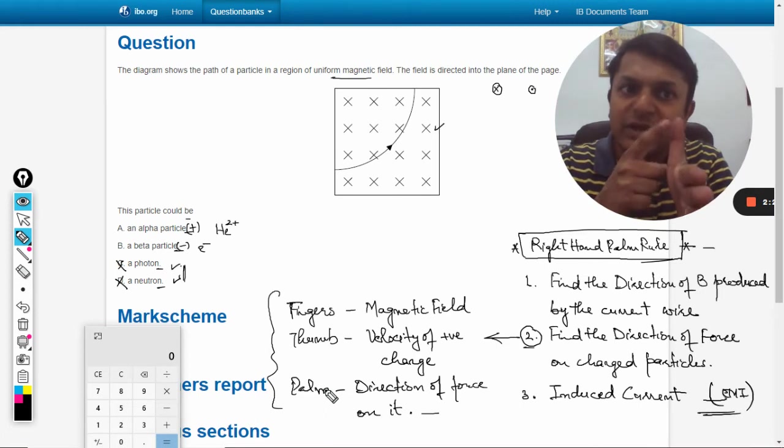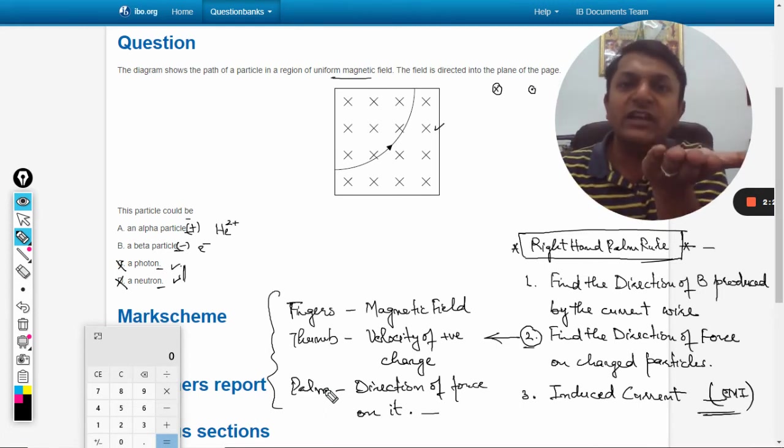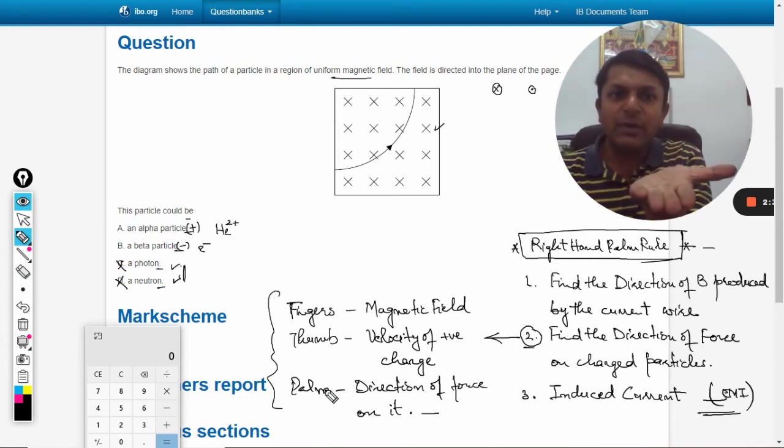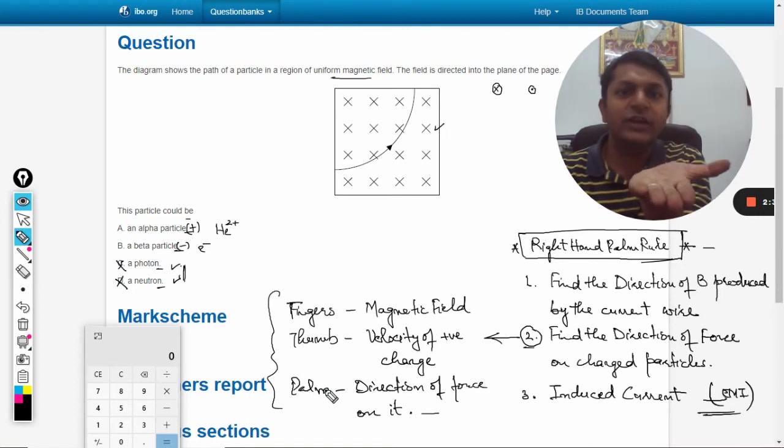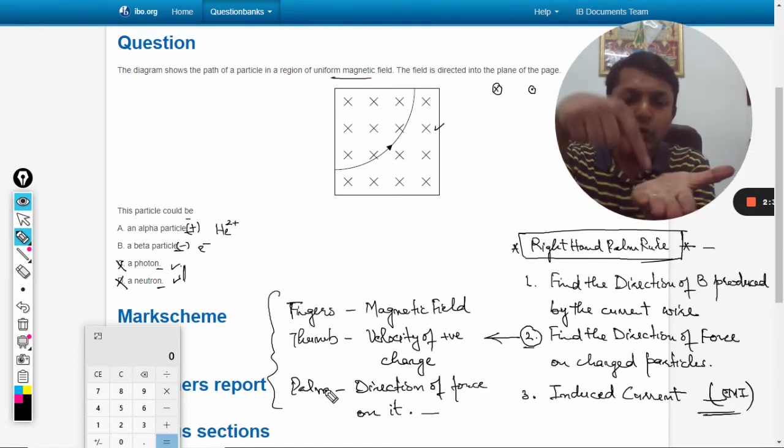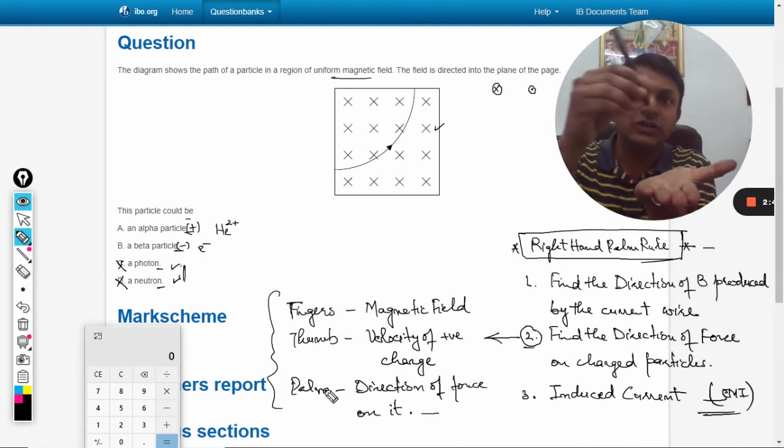I keep my palm like this: fingers are pointing towards the magnetic field, and my thumb is pointing towards the direction of the positive charge. So my palm is pointing towards the direction of the force.